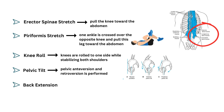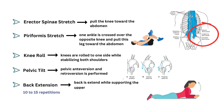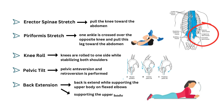Back Extension — the back is extended while supporting the upper body on flexed elbows. Progression is made in the same position but supporting the upper body on the hands with the elbows extended.